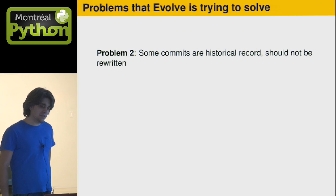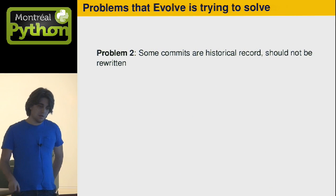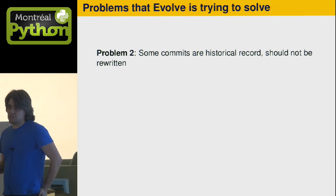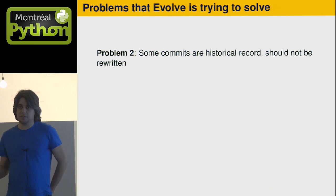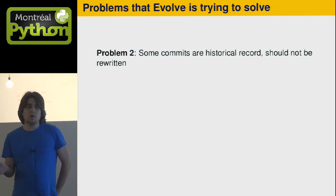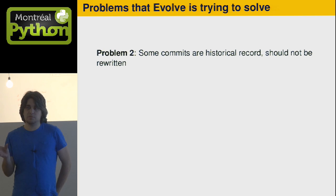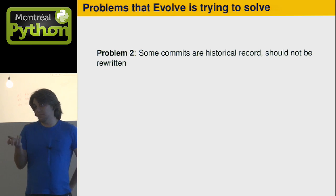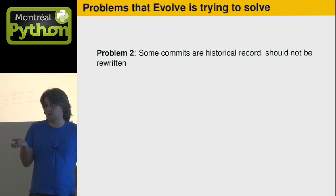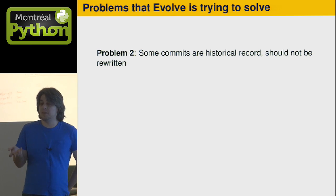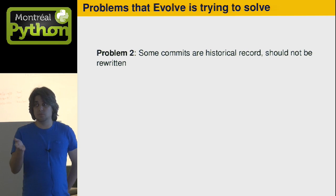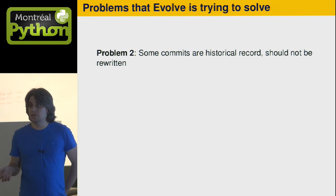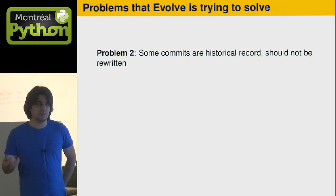Problem number two is that some commits just plain should never be rewritten because they're historical record. You want your historical record to be good for several reasons: you want git blame or hg blame to work correctly, you want to be able to know who did what, and you want to be able to bisect bugs.